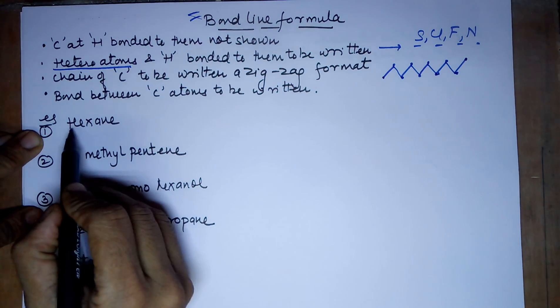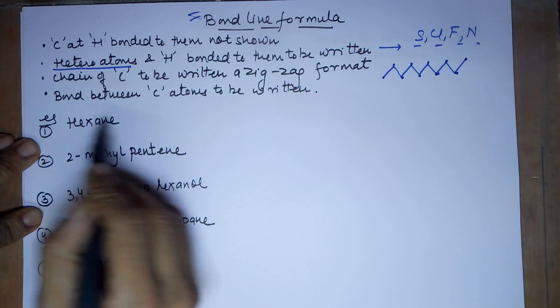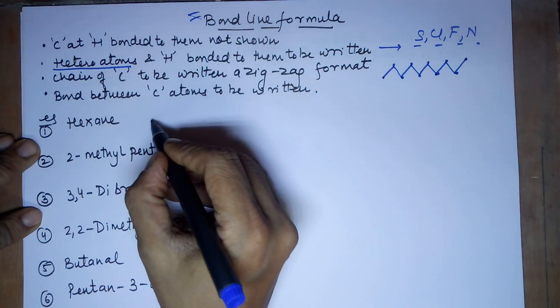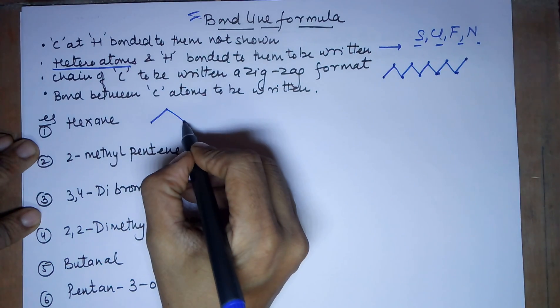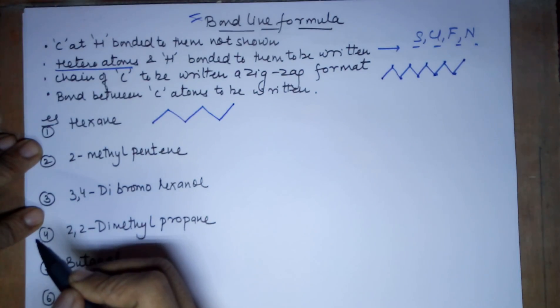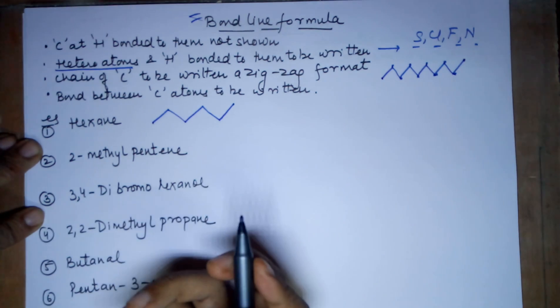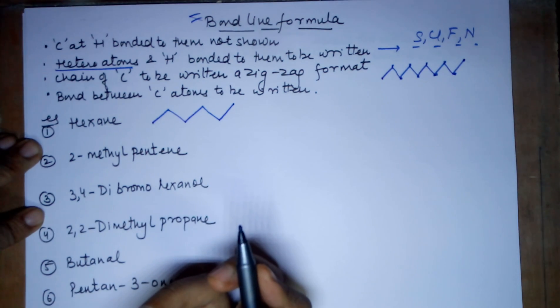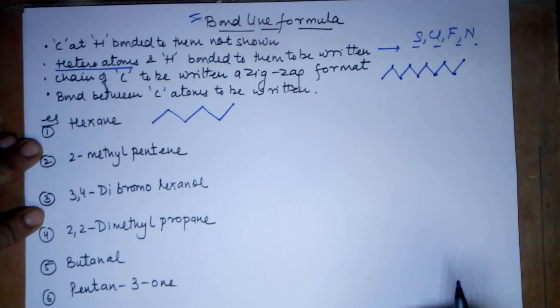The first example is hexane. Hexane has 6 carbon atoms in a row. So, 1, 2, 3, 4, 5 and 6. Carbon is understood and the hydrogens attached to them is understood. We neither write the carbon atom, nor write the hydrogens attached to it. So, the structure is this and it ends here.